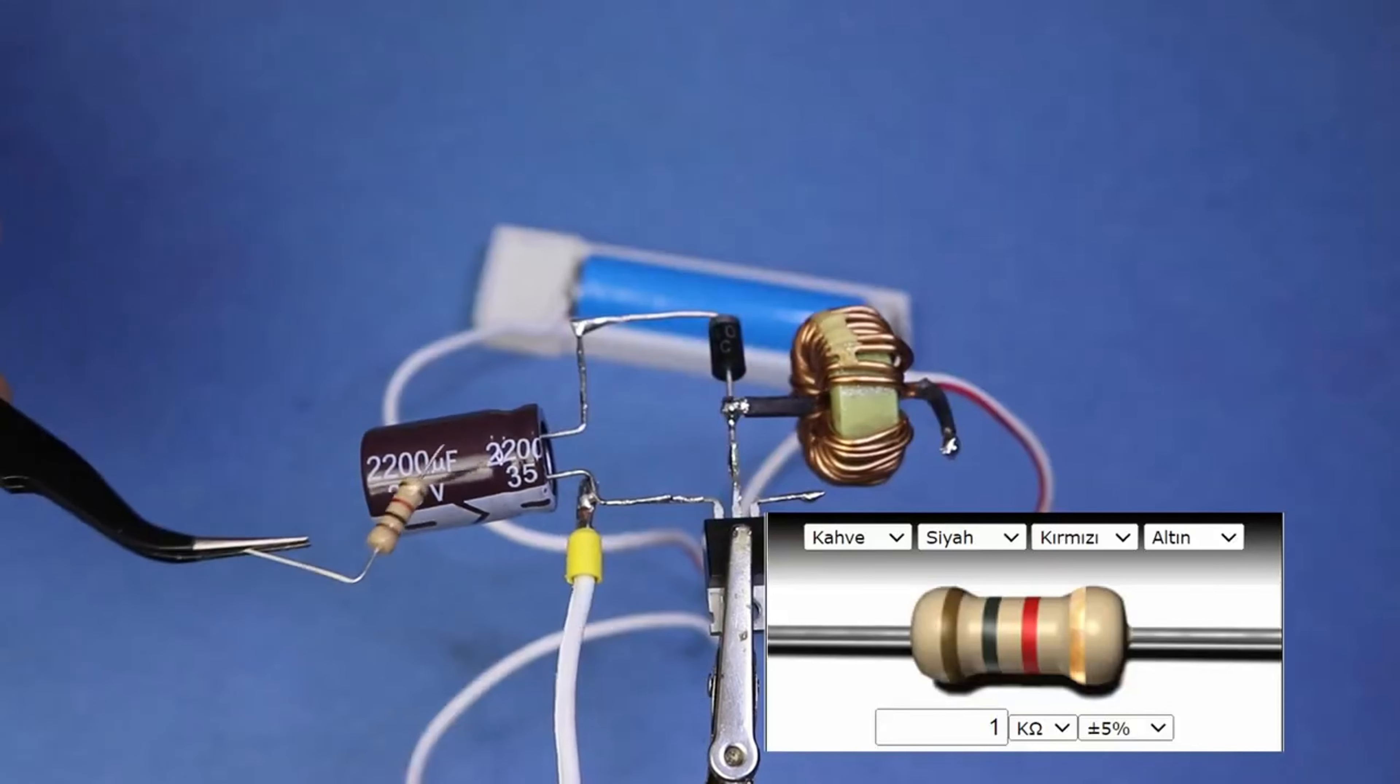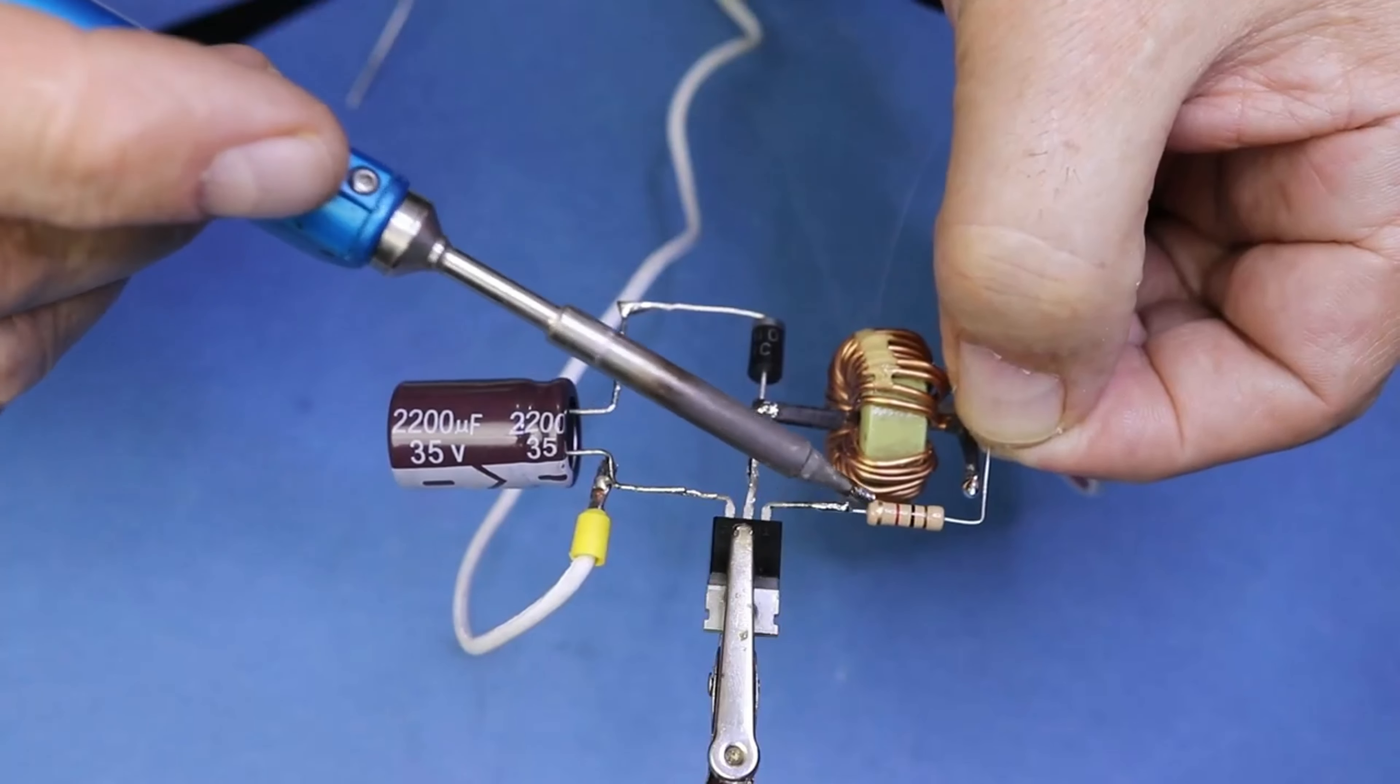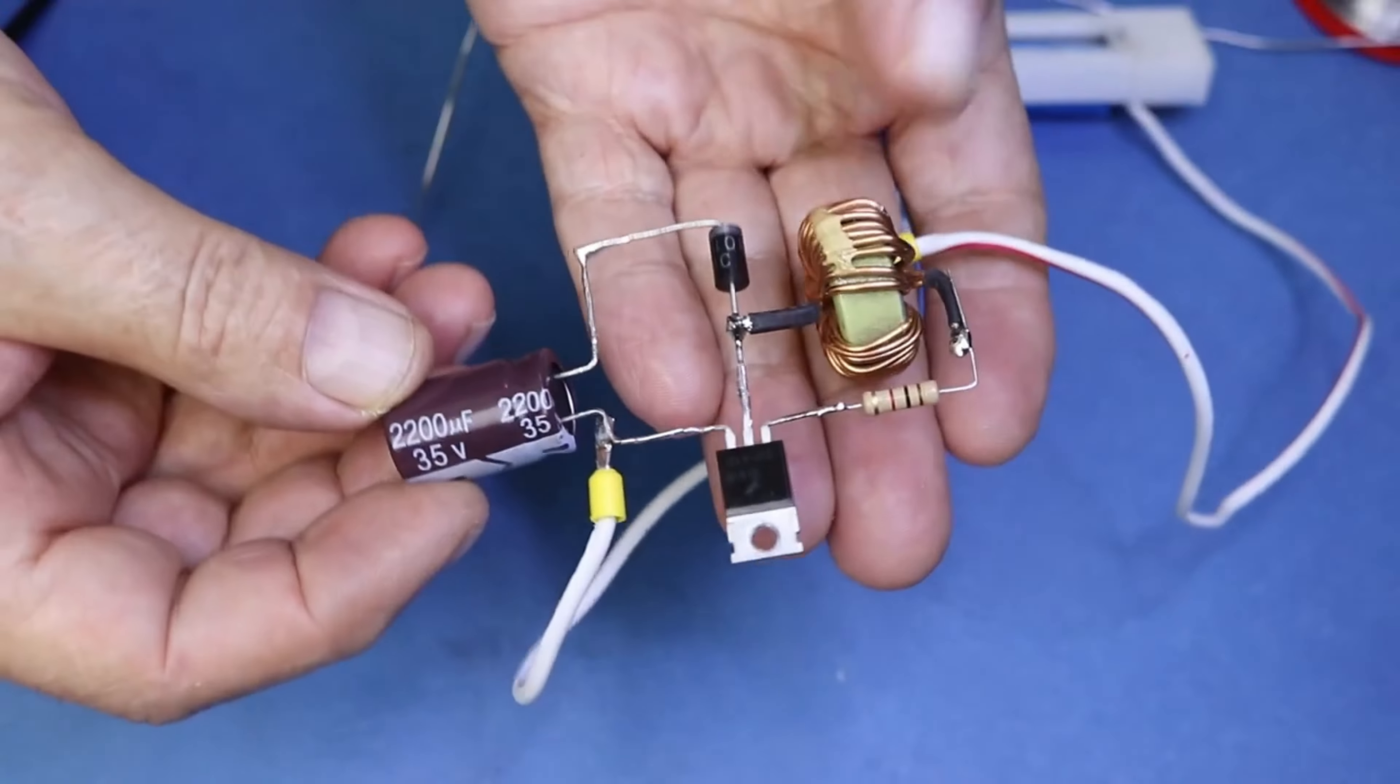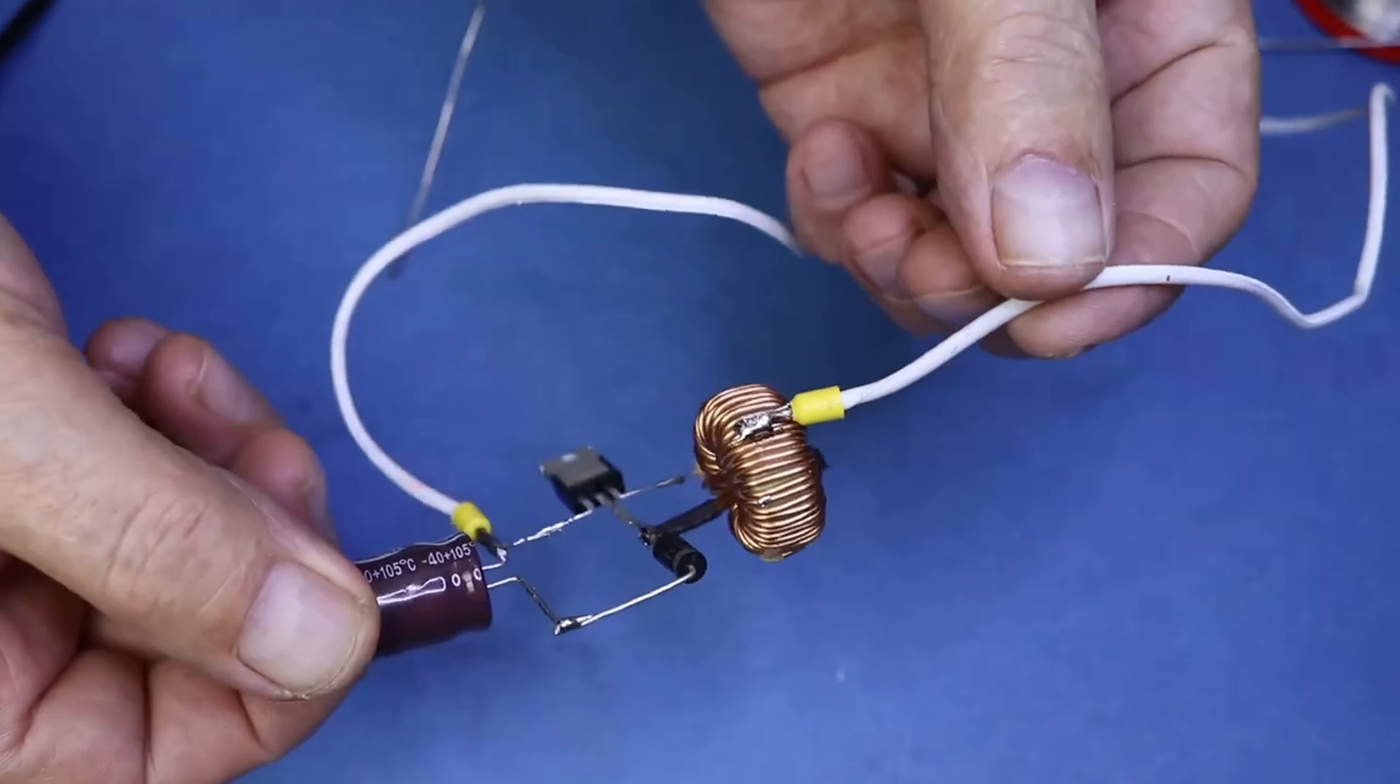1X coil 30 to 50 turns recovered from power supply, 1X 18650 battery, 1X aluminum heat sink.